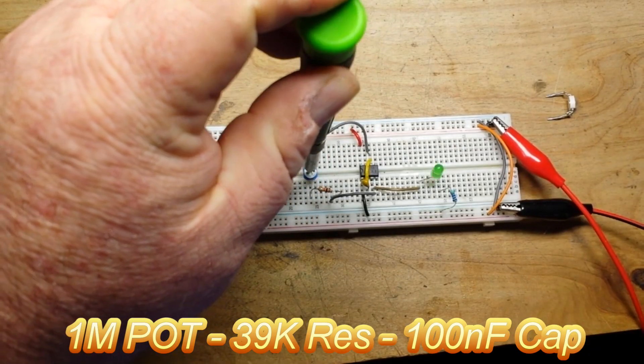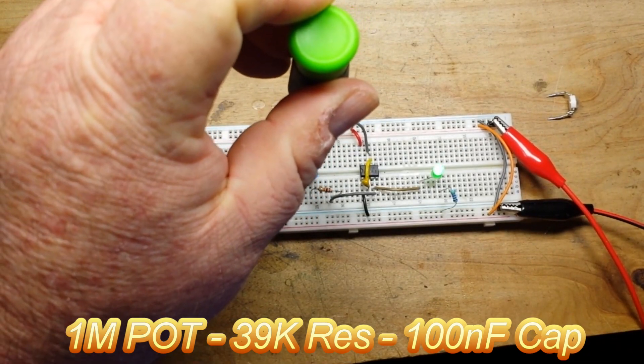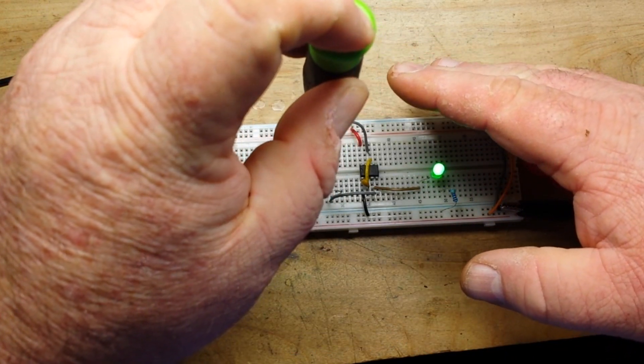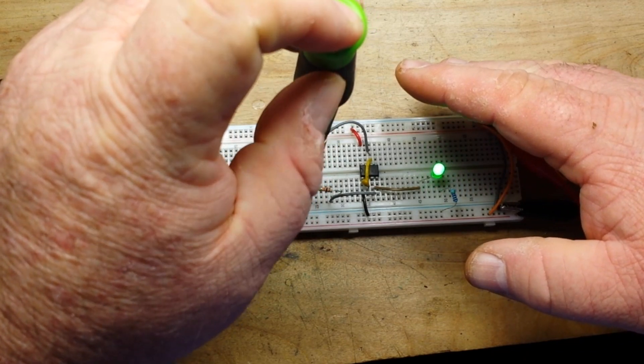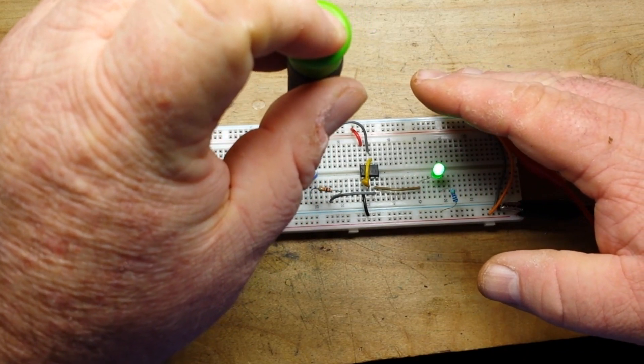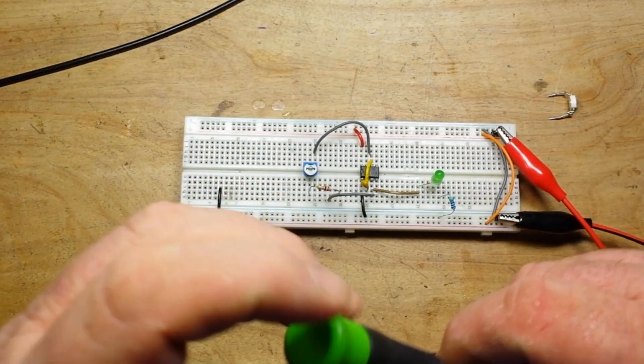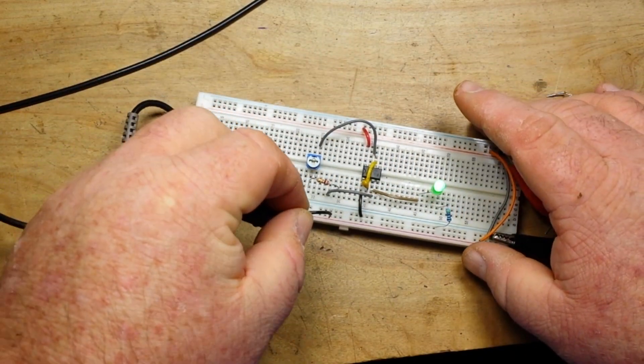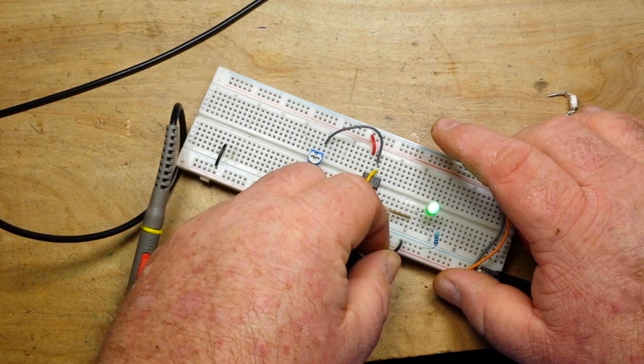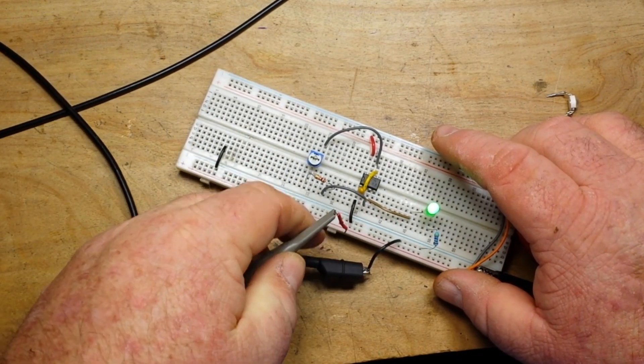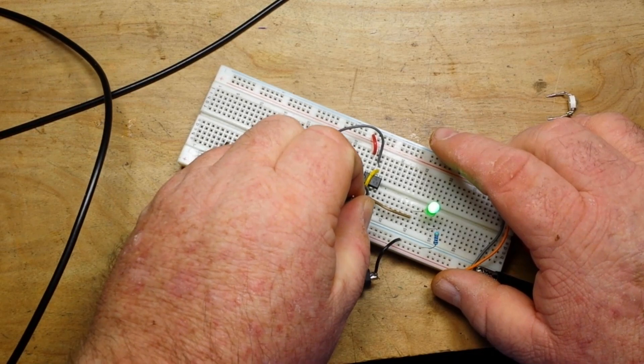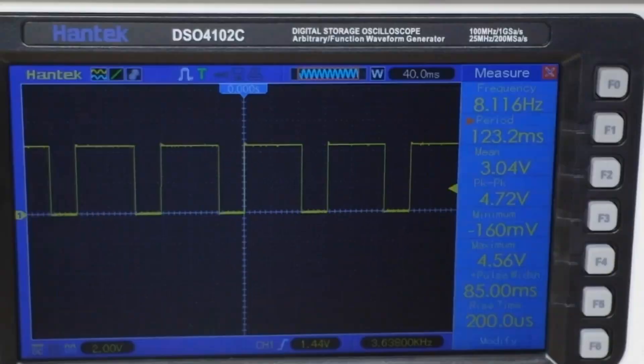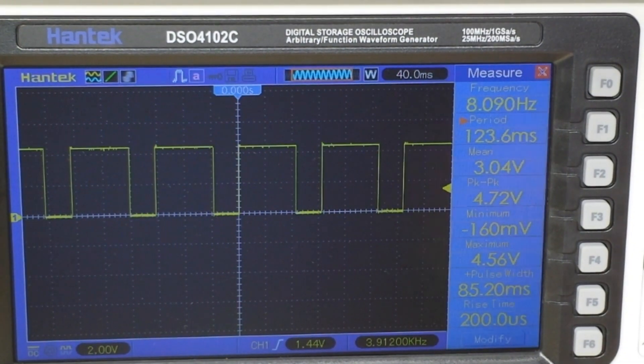So here we have it again. You can see now, you can't really see how much that's flashing there. There, we can slow it way down and then it speeds way up. So let's put the oscilloscope back on it so that you can see.